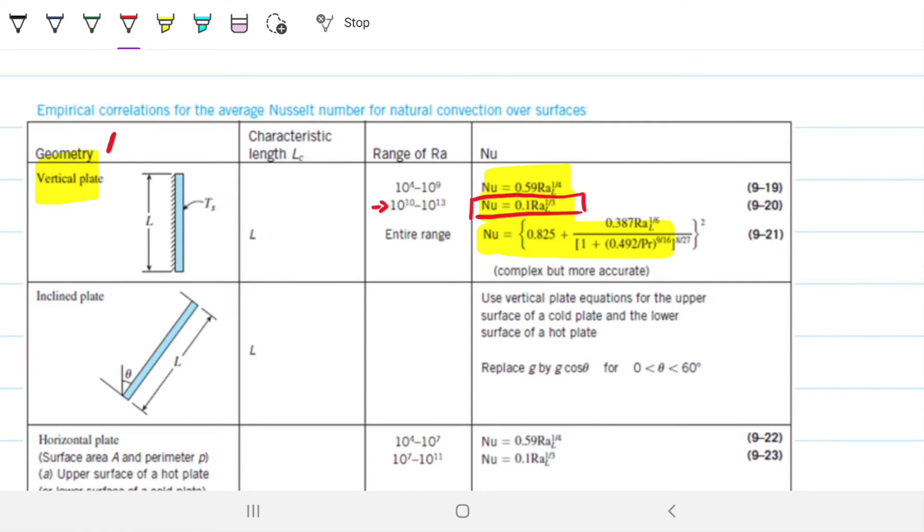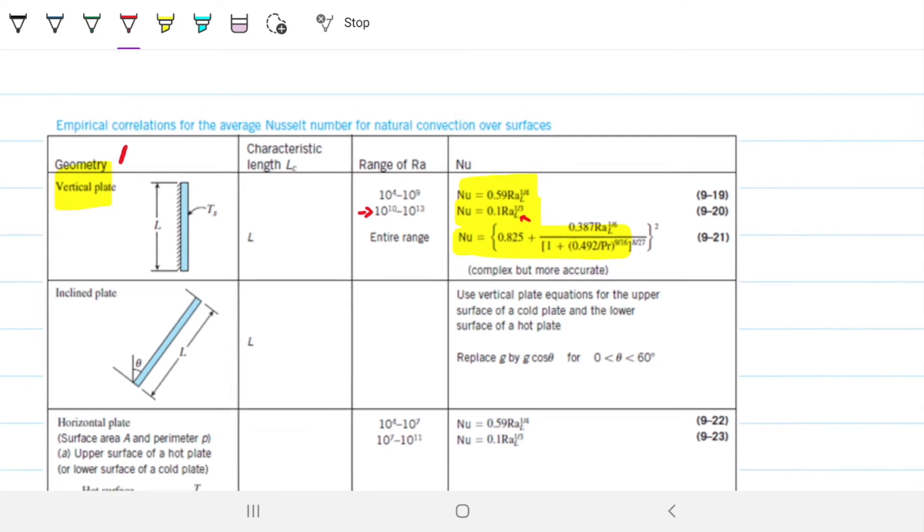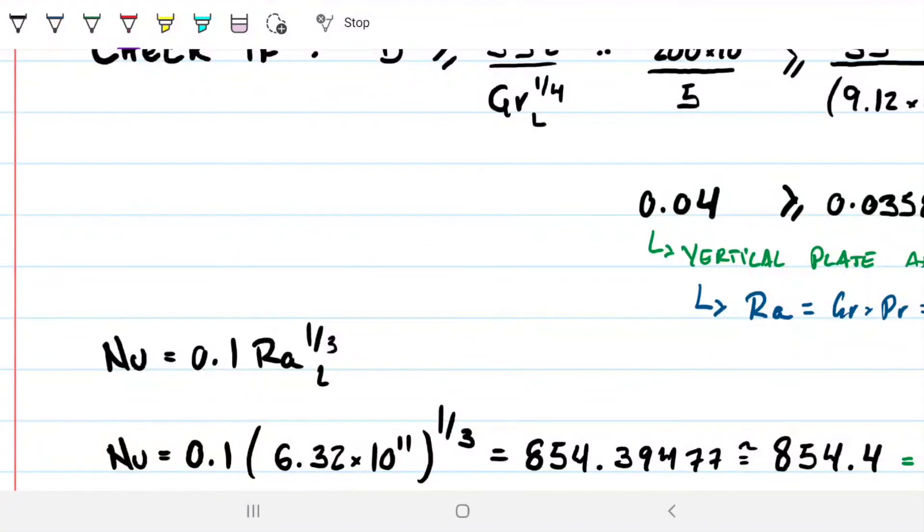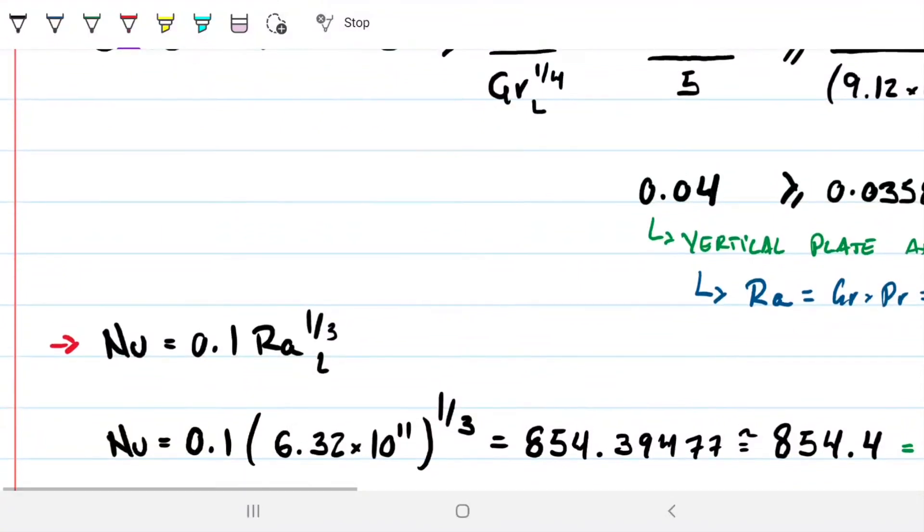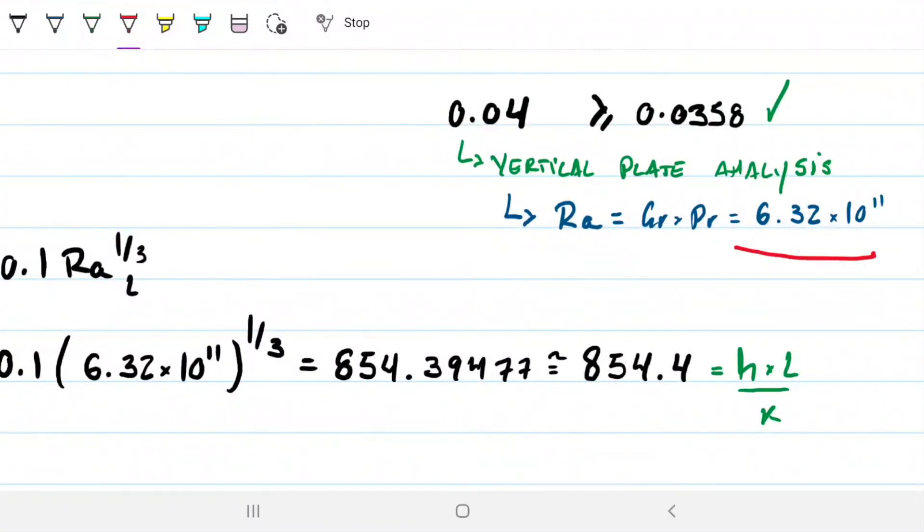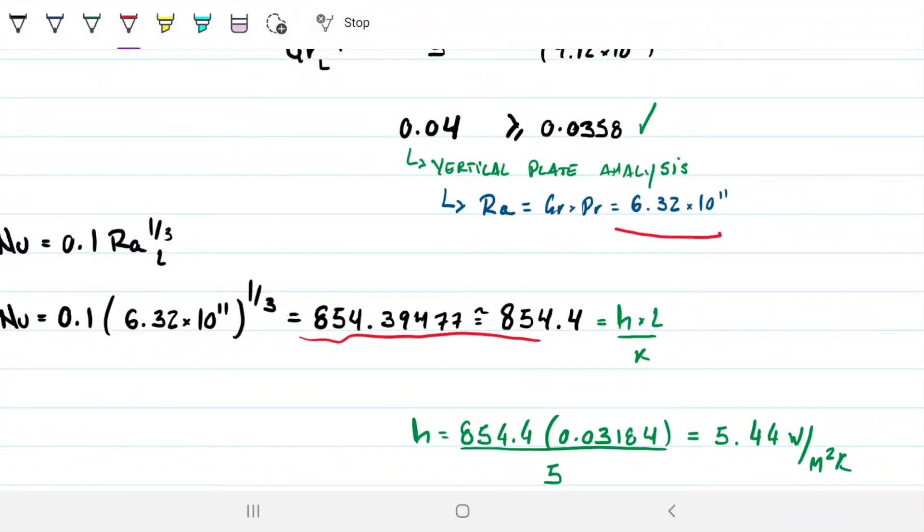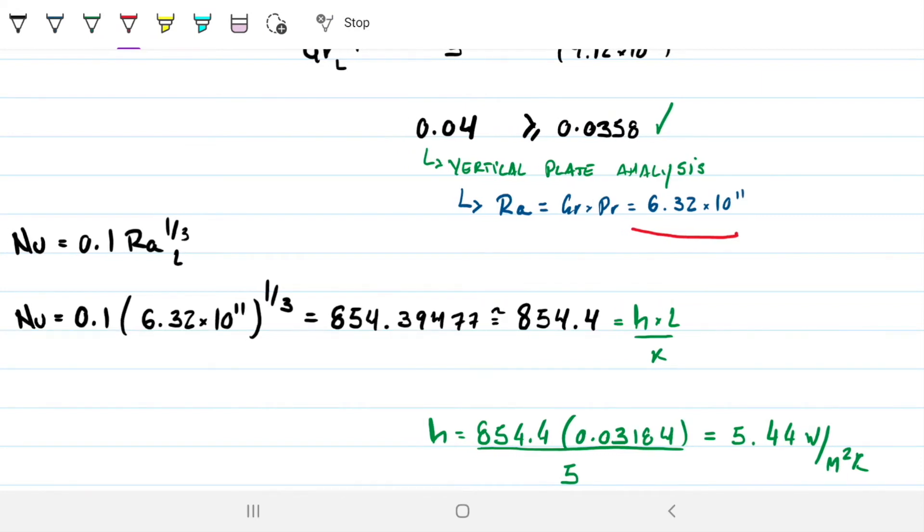And then what we get is 0.04 is greater than 0.03, which is good, which means we can indeed use the vertical plate analysis. What I did next is calculate Rayleigh. Rayleigh is just Grashoff times Prandtl, so that's very straightforward. I simply grabbed this value here, multiplied by this guy here that we got from our interpolation, and I got 6 times 10 to the 11th. So with that information, we can go back to our vertical plate analysis.